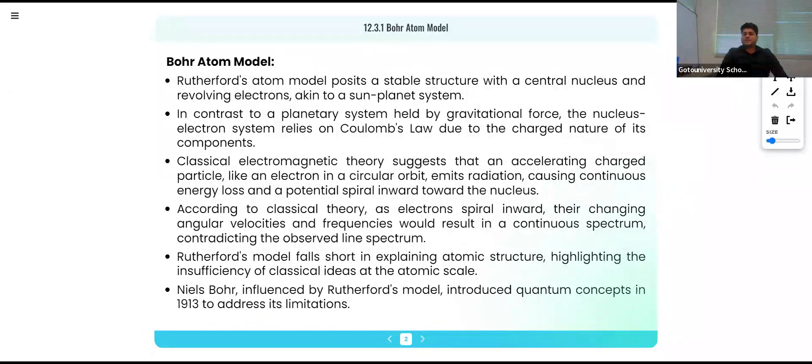Rutherford-Bohr atomic model possessed a stable structure with a central nucleus and revolving electrons. Bohr gave a new model with a stable structure with a central nucleus and electrons revolving in a sun-planet system. In addition to the planetary system held by gravitational force, the nucleus-electron system relies on Coulomb's law due to the charged nature of components.